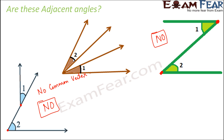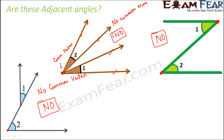Third example — angle 1 and angle 2. Here we do see a common vertex. For angle 1, one arm is this and the other arm is this. For angle 2, one arm is this and the other arm is this. So basically there is no common arm here, and therefore these are also not adjacent angles. However, if we asked whether angle 1 and angle 3 are adjacent, then they would be — they have a common vertex, a common arm, and no common interior points. So angle 1 and angle 3 would be adjacent angles.